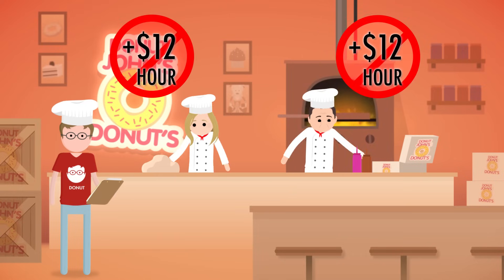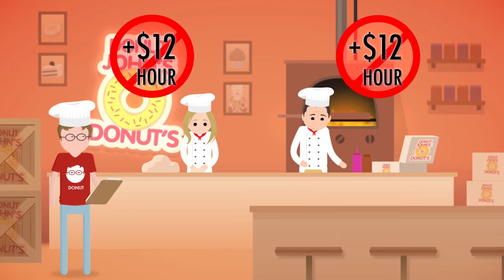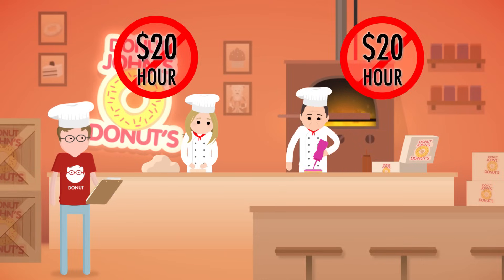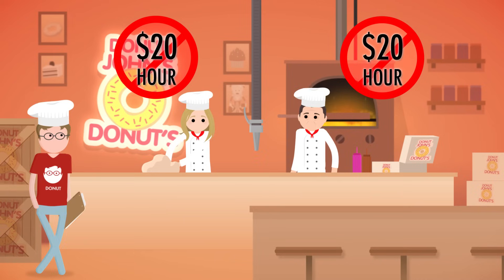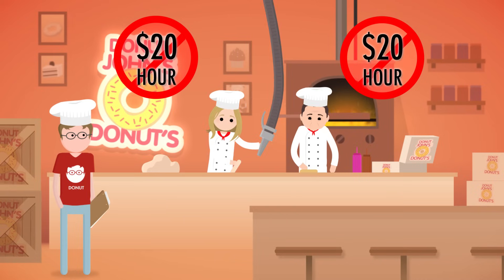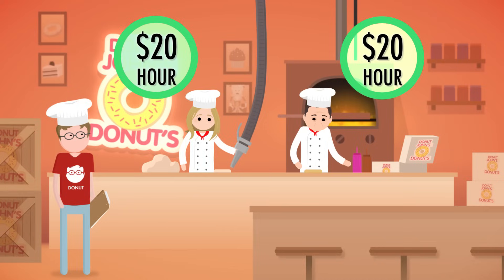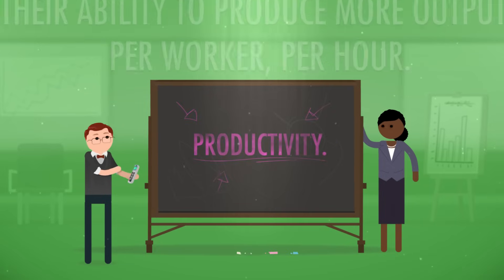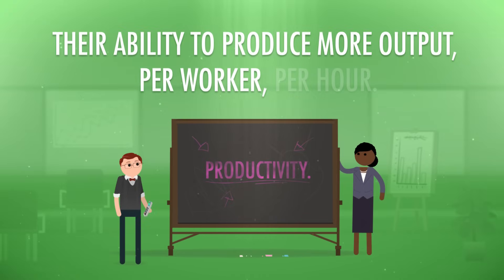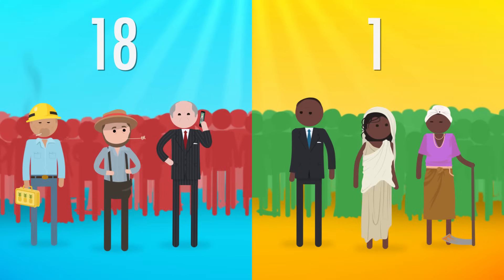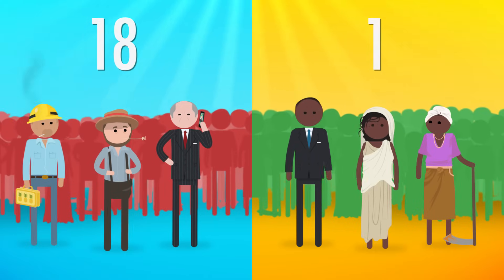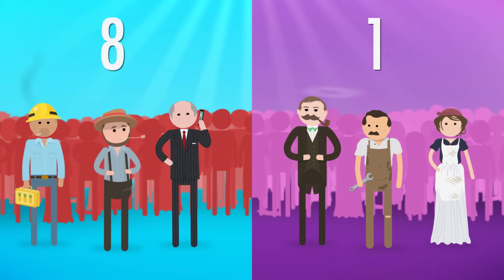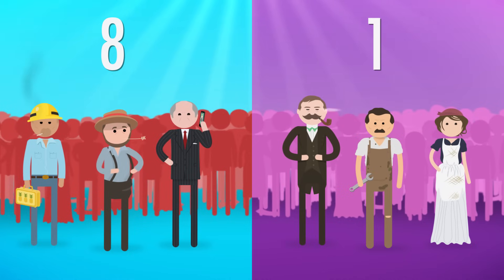If John wants to stay in business, he can't pay his workers more than $12 an hour — he needs to pay for ingredients and the oven. But if John could find a way for each worker to produce four dozen donuts per hour, he could pay them $20 per hour. Simply put, the more that each worker can produce, the more money each can earn. Economists argue the main reason some countries are rich is because of their productivity — their ability to produce more output per worker per hour. US workers earn 18 times more per hour than Bangladeshi workers because they're able to produce 18 times more output per hour. US workers today earn eight times more per hour than US workers 100 years ago because they produce eight times more output per hour.